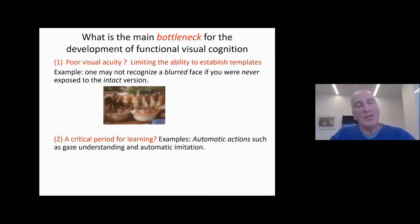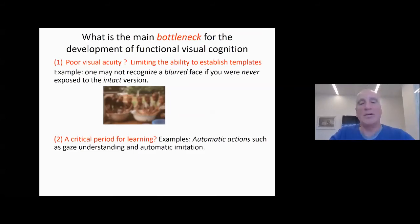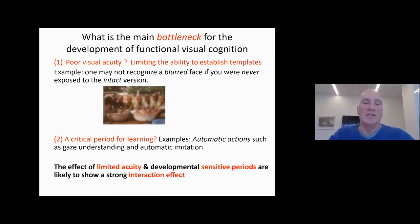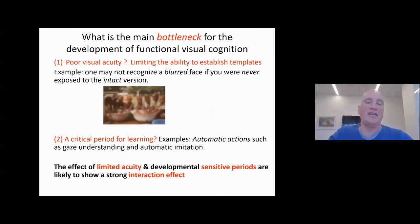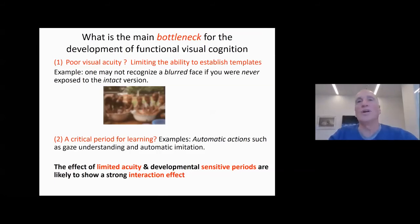Another bottleneck is that there could be a critical period for learning some elements — such as the automatic action that I mentioned, gaze understanding, and also automatic imitation, which I did not get into. The effect of limited acuity and developmental sensitive periods are likely to show a strong interaction effect — if you had very poor acuity plus you were exposed to object categories late, you may not make sense of them. But as I said, these patients are remarkable in what they are able to attain.